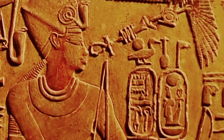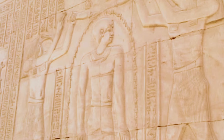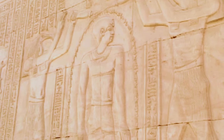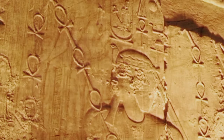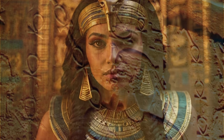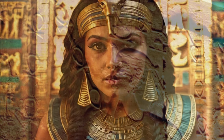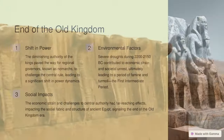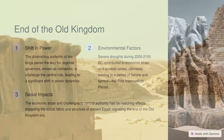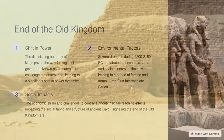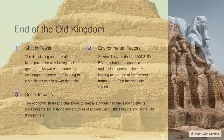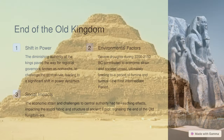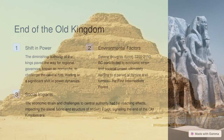Kings also made land grants to their mortuary cults and local temples, to ensure that these institutions had the resources to worship the king after his death. Scholars believe that five centuries of these practices slowly eroded the economic vitality of Egypt, and that the economy could no longer afford to support a large centralized administration. As the power of the kings diminished, regional governors called Nomarchs began to challenge the supremacy of the office of king. This, coupled with severe droughts between 2200 and 2150 BC, is believed to have caused the country to enter the 140-year period of famine and strife known as the First Intermediate Period.